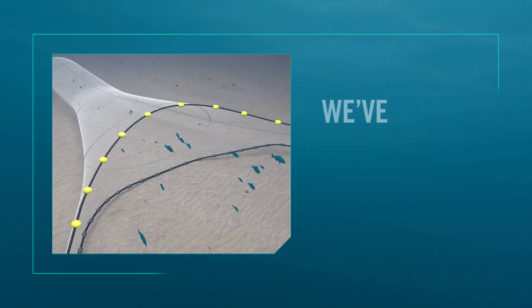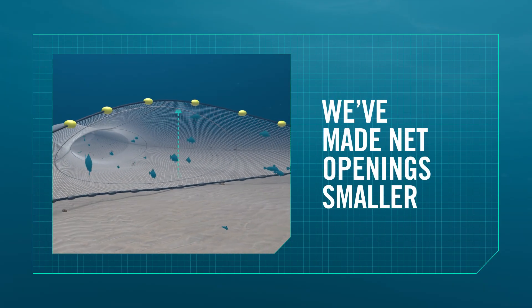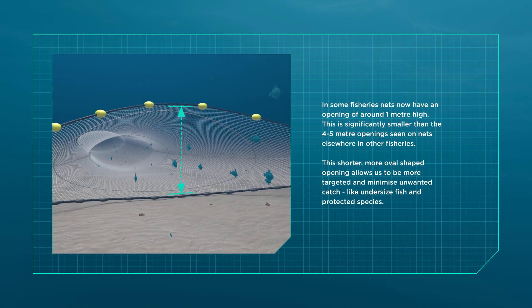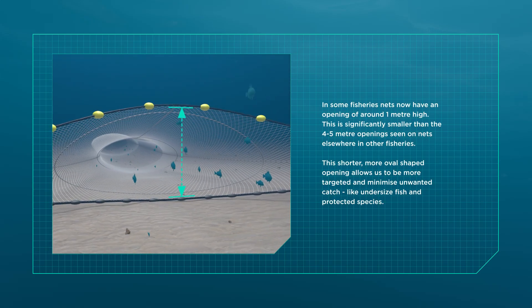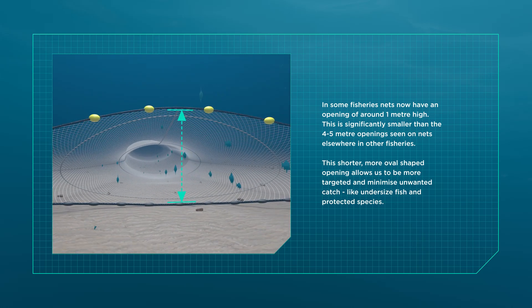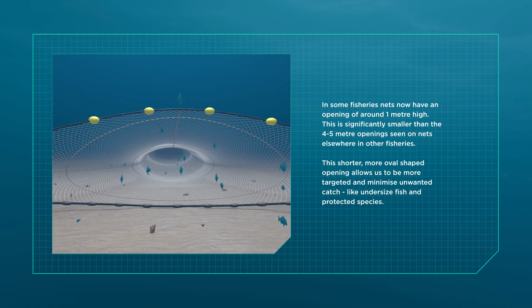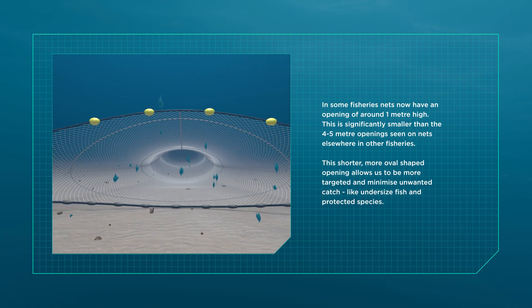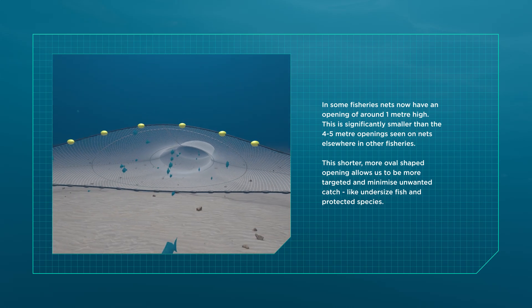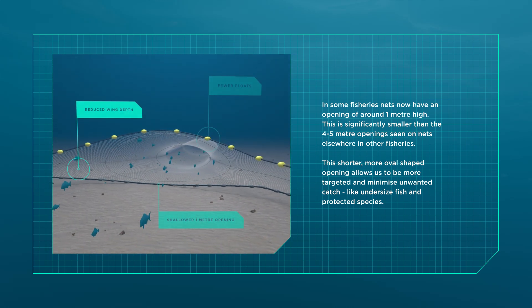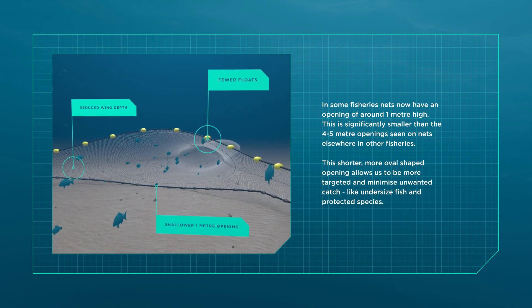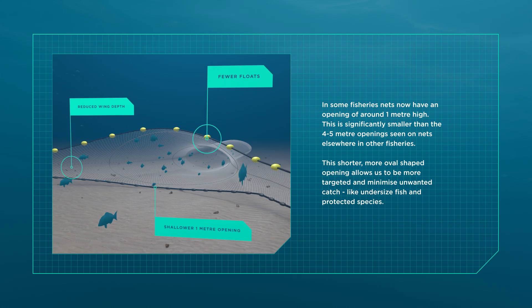One of these initiatives is making net openings smaller in some fisheries. We've done this by tweaking the configuration of our nets to create a shorter, more oval shaped opening that's only around one metre high. This is significantly smaller than the four to five metre openings seen on nets elsewhere in other fisheries. This has helped us to be more targeted in how we fish, which helps to keep stocks sustainable. It also minimises unwanted catch like undersized fish and protected species.